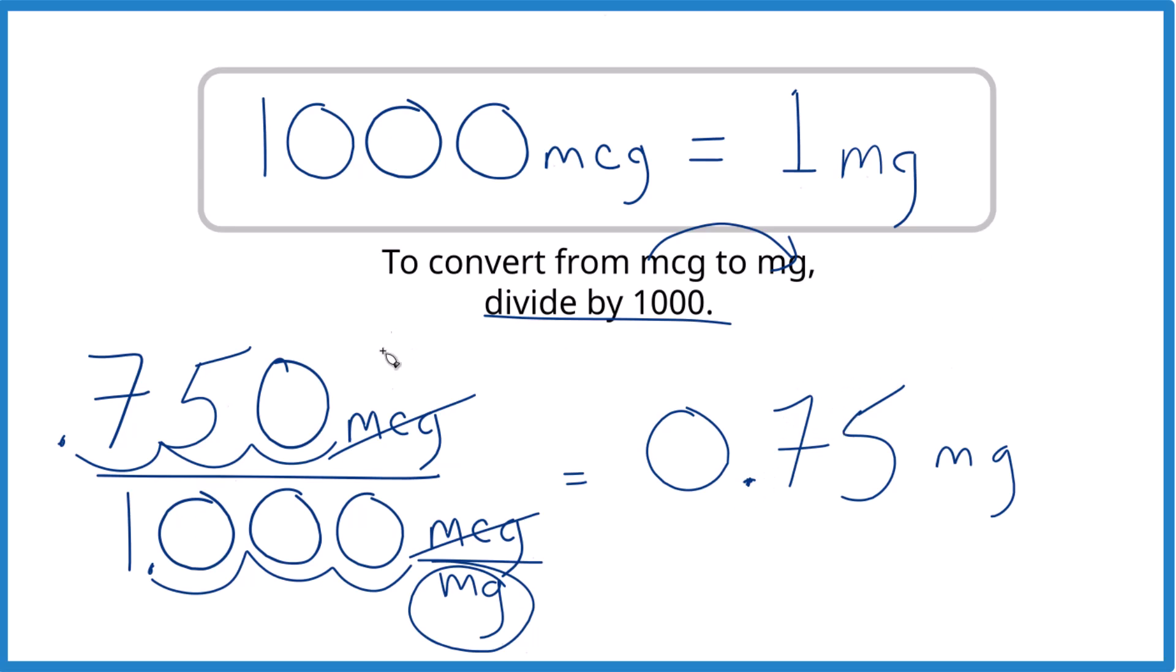So in answer to our question, to get from 750 mcg to mg, we divide by 1,000, and we end up with our answer: 0.75 milligrams.